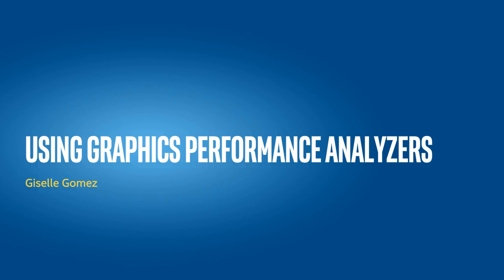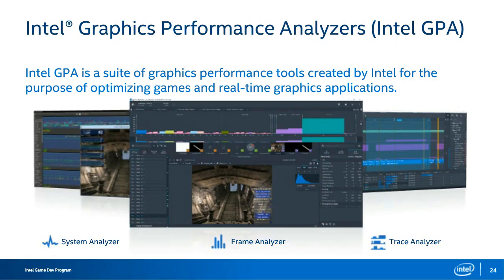GPA is not just one tool — it's actually multiple tools. In the suite you'll find three tools: System Analyzer, Frame Analyzer, and Trace Analyzer. Each has a specific function for profiling, but the one most beneficial to developers is Frame Analyzer. I will be focusing on the Frame Profiling tool for this webinar, even though System Analyzer and Trace Analyzer also offer benefits in the optimization process.